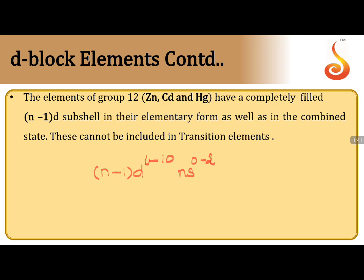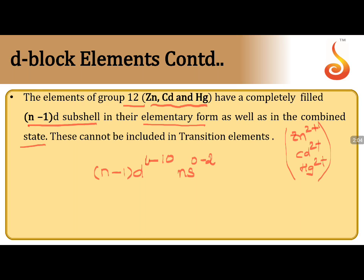The elements of group 12 — zinc, cadmium, mercury — have completely filled (n-1)d subshell in both elementary and combined form. For example, Zn²⁺, Cd²⁺, Hg²⁺ always have completely filled d configuration. This makes them d-block elements but NOT transition elements. They are considered only d-block, not transition elements — a very important point for group 12.